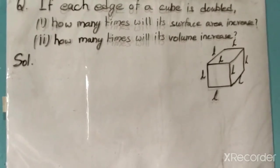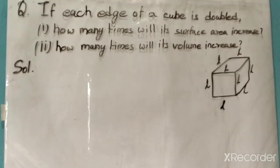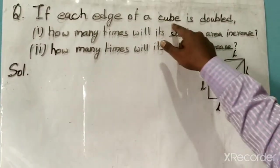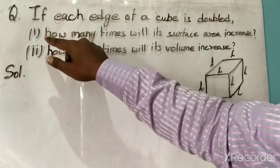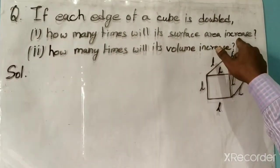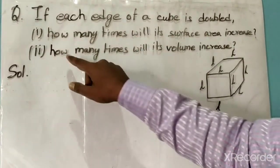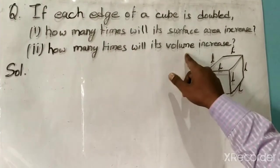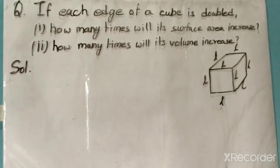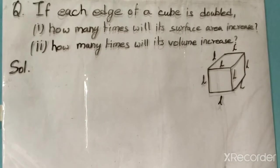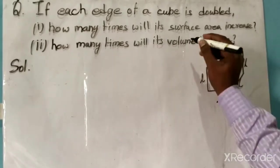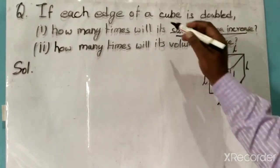The question is: if each edge of a cube is doubled, first, how many times will its surface area increase? Second, how many times will its volume increase? Please watch the video till the end so that the concept will be clear.